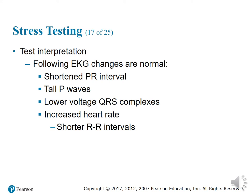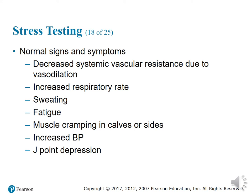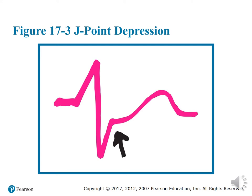The following EKG changes are normal during stress testing: shortened PR interval, tall P waves, low voltage QRS complexes, increased heart rate, and shorter RR intervals. Normal physiological signs include decreased systemic vascular resistance, increased respiratory rate, sweating, fatigue, muscle cramping in calves, increased blood pressure, and J-point depression.